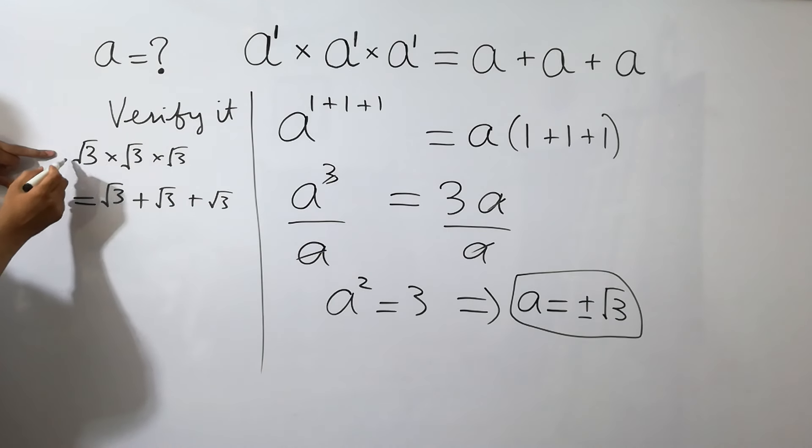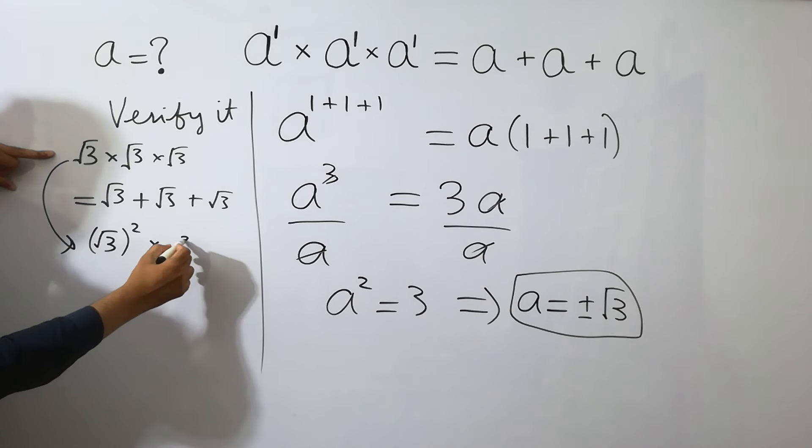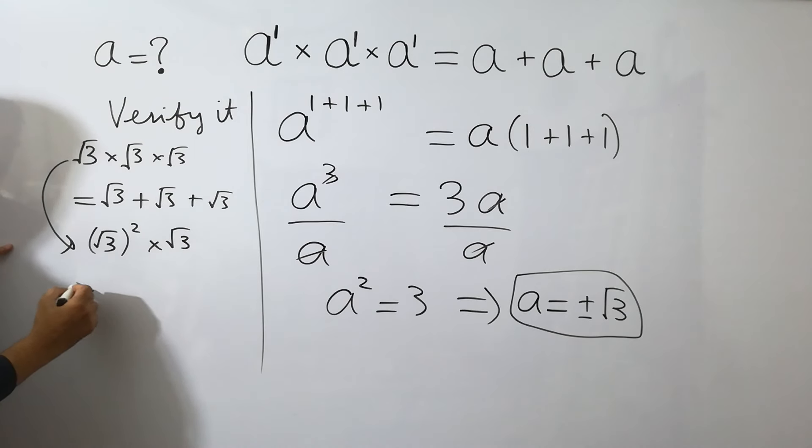Here, you can see the square root of 3 whole square multiplied by square root of 3. And on right hand side, we can see the value of square root of 3 by common, 1 plus 1 plus 1, we will get 3.